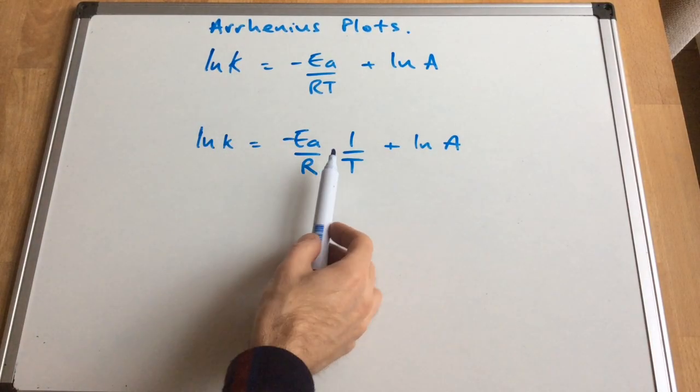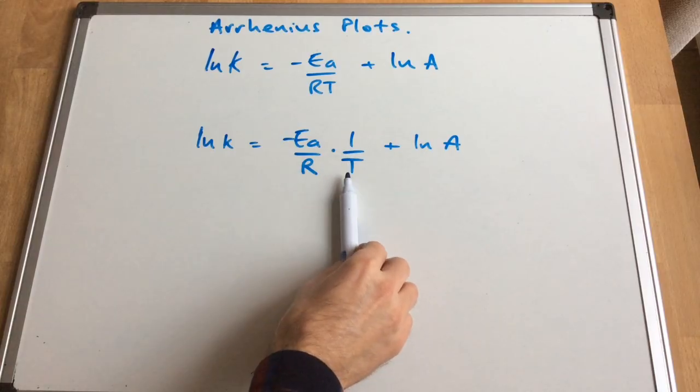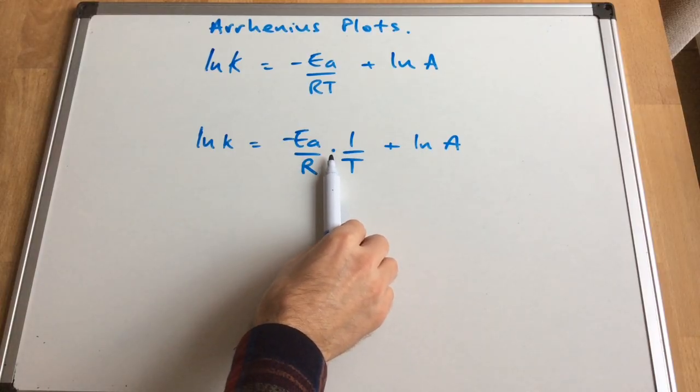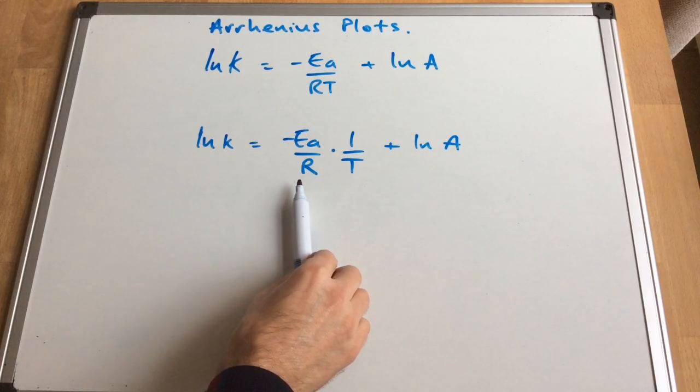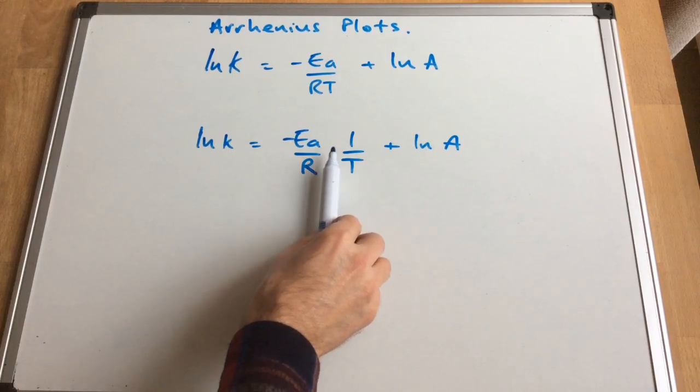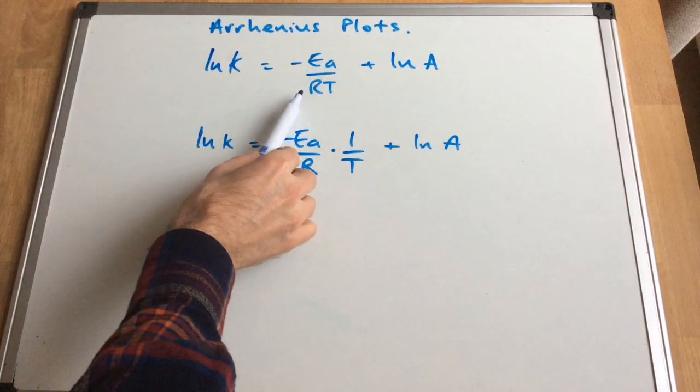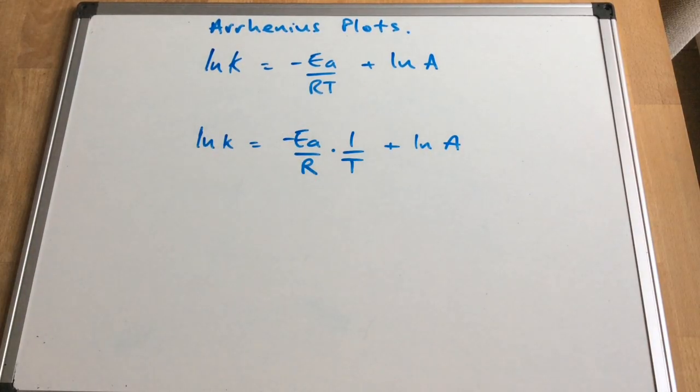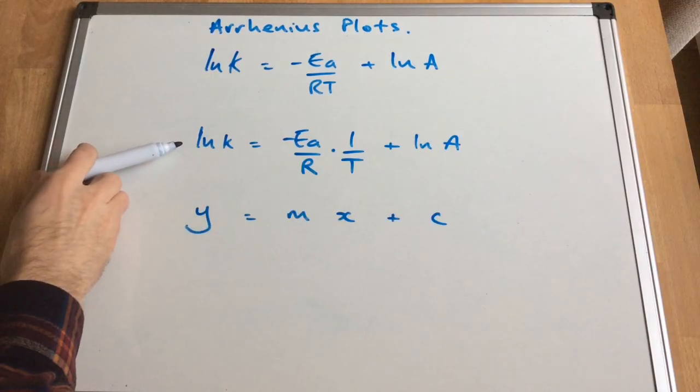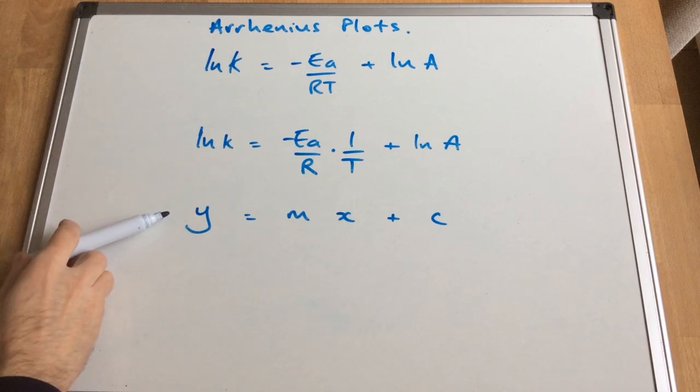I've taken out the 1 over T and separated it from the minus Ea over R. So essentially that there is exactly the same as that. So why have I done that? I've done it because it makes it easier to see that this form of the equation is actually in the y equals mx plus c format.